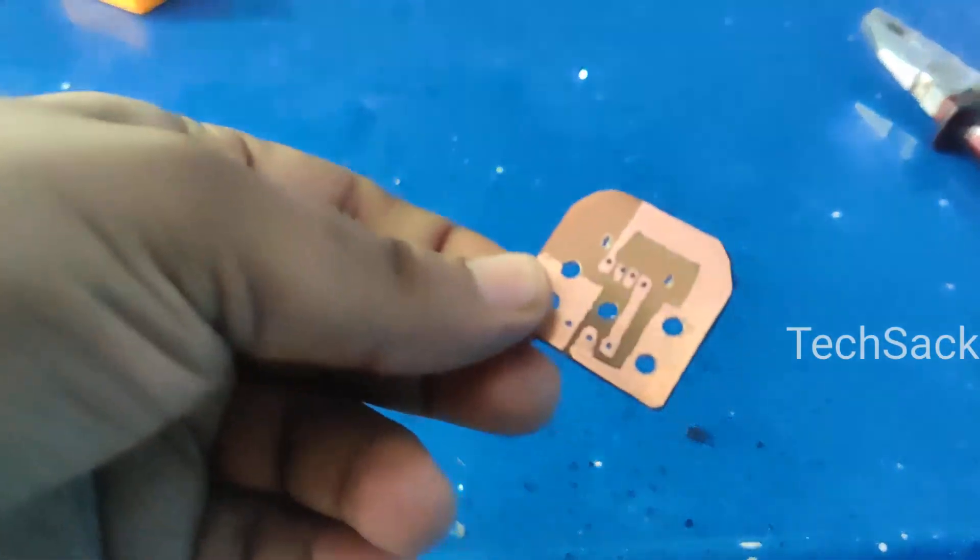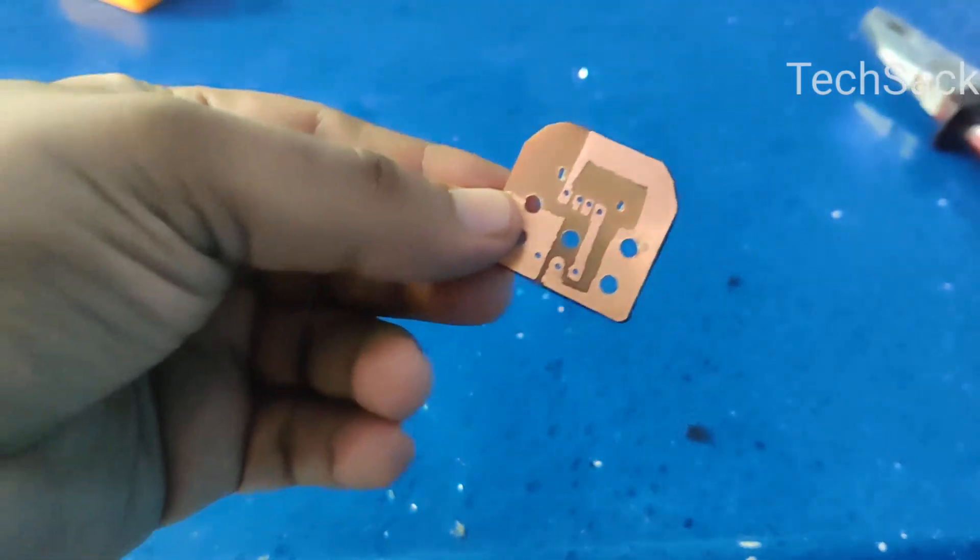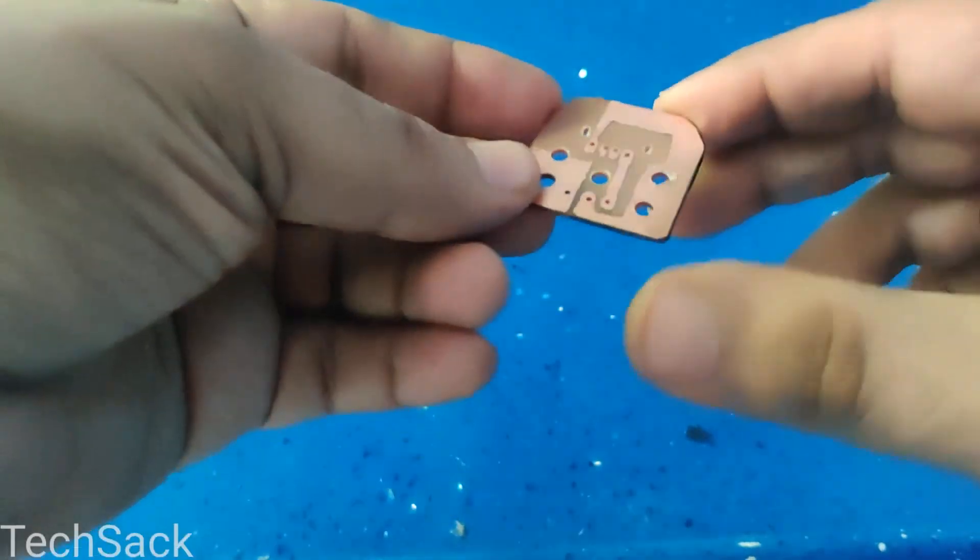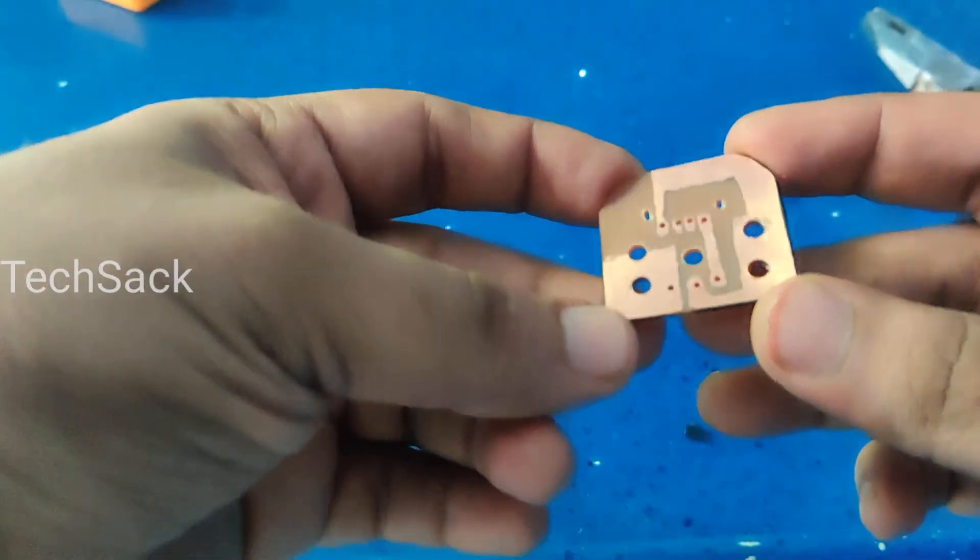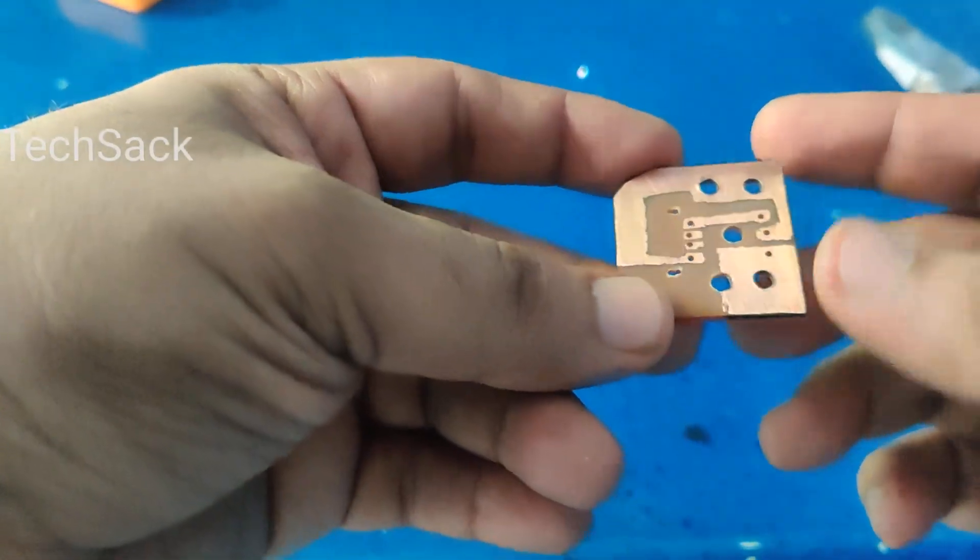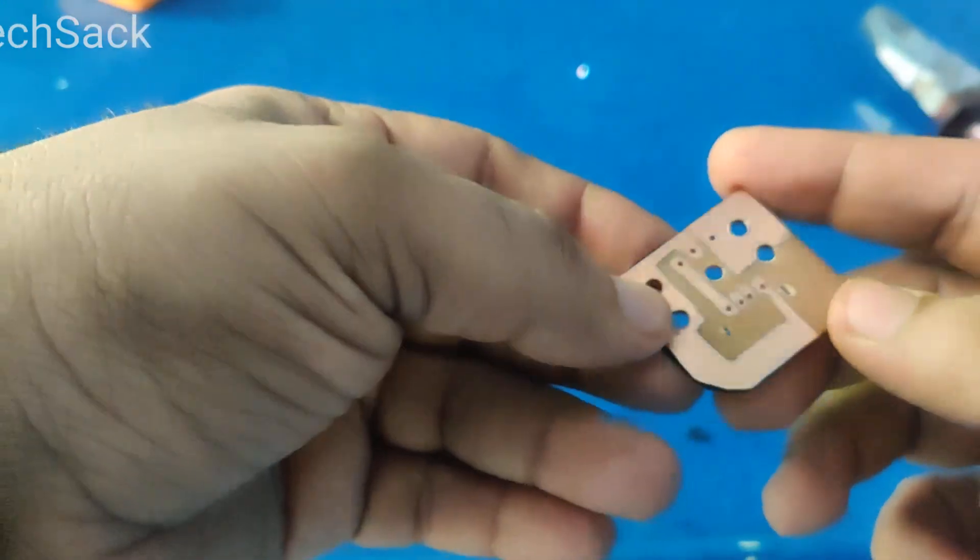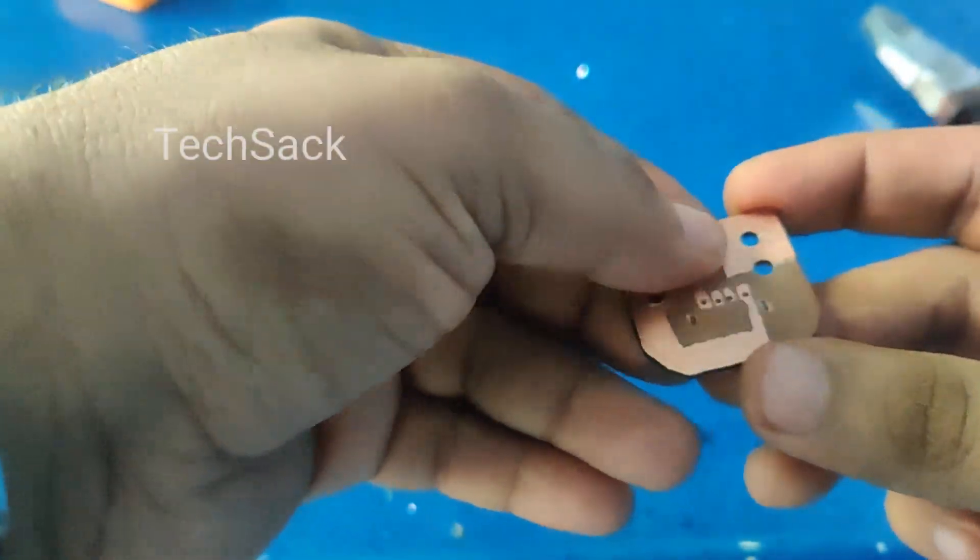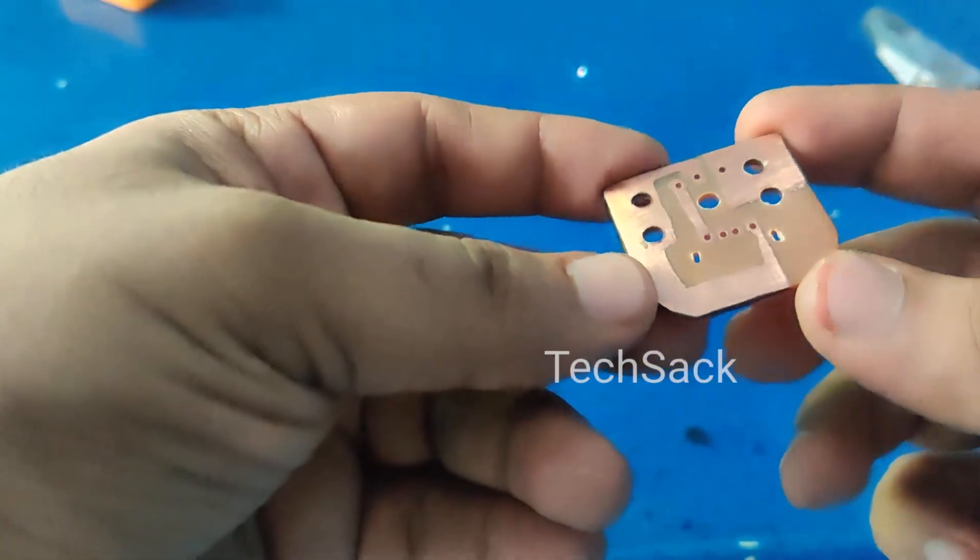This is how the circuit looks after drilling all the holes, and now as it is ready, before I put down the components into these holes, I am going to tin this copper layer with soldering metal. So the components can easily solder to these holes, else there would be some oxide layer over these copper plates and soldering wouldn't be perfect.